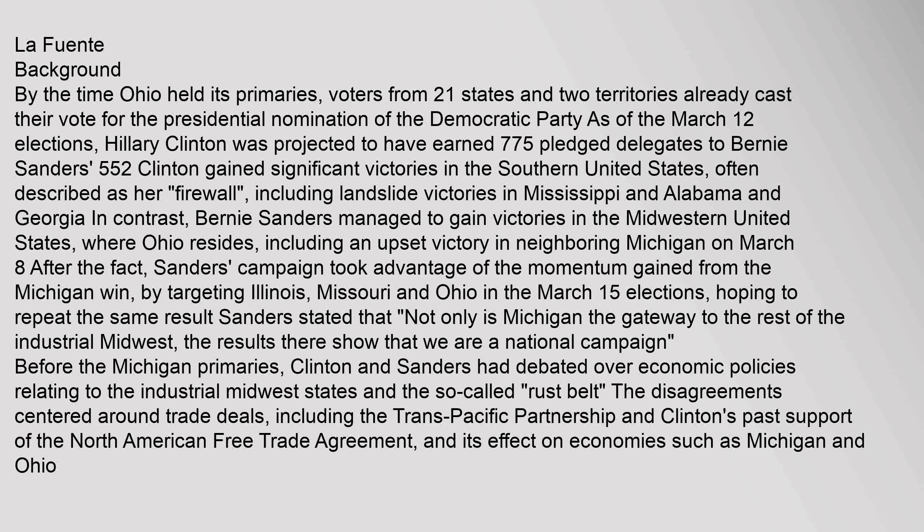In contrast, Bernie Sanders managed to gain victories in the Midwestern United States, where Ohio resides, including an upset victory in neighboring Michigan on March 8. Sanders' campaign took advantage of the momentum gained from the Michigan win, by targeting Illinois, Missouri, and Ohio in the March 15 elections, hoping to repeat the same result. Sanders stated that 'not only is Michigan the gateway to the rest of the industrial Midwest, the results there show that we are a national campaign.' Before the Michigan primaries, Clinton and Sanders had debated over economic policies relating to the industrial Midwest states and the so-called 'rust belt,' including the Trans-Pacific Partnership and Clinton's past support of the North American Free Trade Agreement.